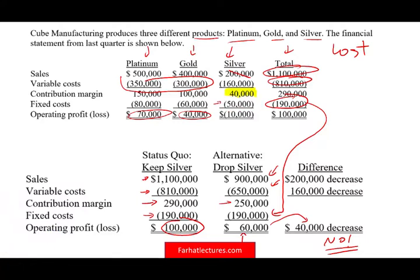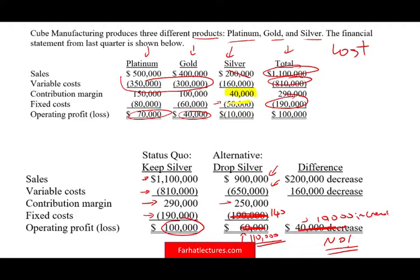Now let's assume if we dropped silver and were also able to remove the $50,000 in fixed costs. In that case, new fixed costs would be $140,000 and profit would be $110,000 — a $10,000 increase — because we eliminated the loss. You can also run what-if analyses, such as getting rid of only 20% or 30% of fixed costs, to find the point of indifference.